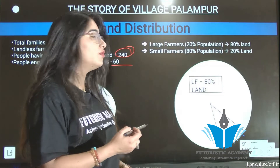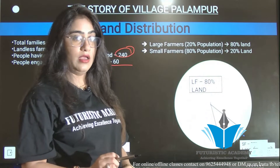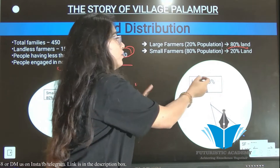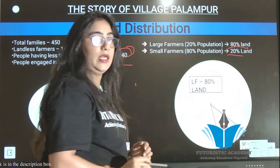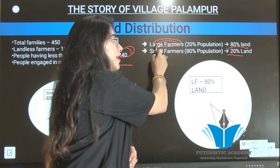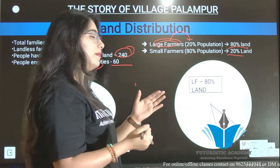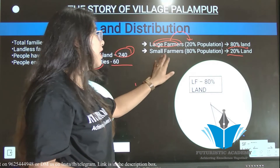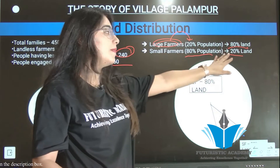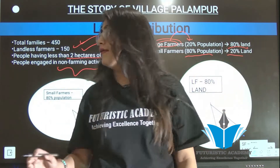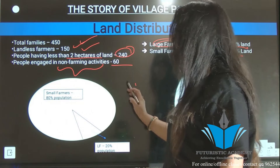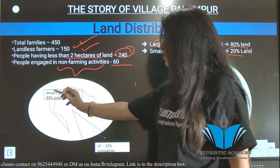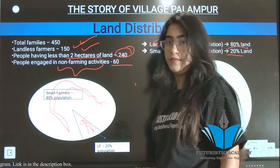Large farmers held 80 percent of the land, while small farmers held only 20 percent of the land. This means large farmers were fewer in population but held the majority of the land, whereas small farmers were greater in number but held only a minority of the land.